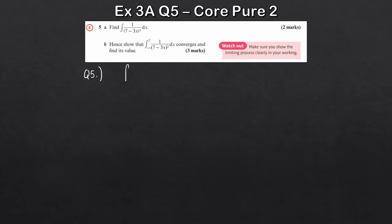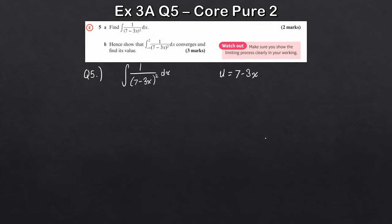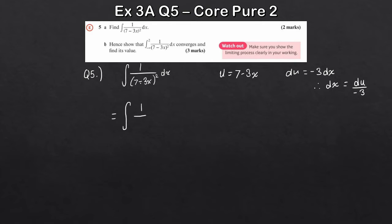For question 5a, I think the easiest way is to use substitution. Let u equal 7 minus 3x. We need to change the variable of integration, so we find du equals minus 3 dx. Therefore, dx equals du divided by minus 3. Using the substitution, this becomes the integral of 1 over u squared times du over minus 3.